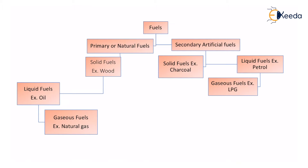Primary or natural fuels are subdivided into solid, liquid, and gas. For solid fuel, the example is wood. You cut the wood directly from the trees, collect it together, and then ignite it. Once ignited, it gives us two things: heat as well as light. Thus, it forms a very good fuel option.